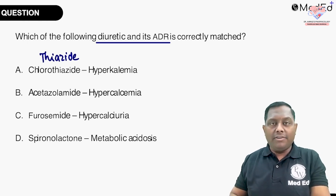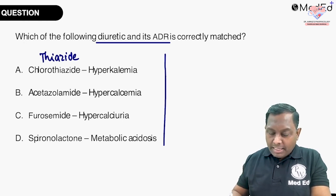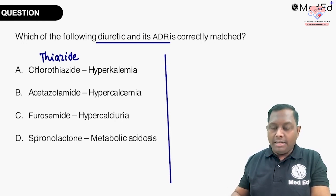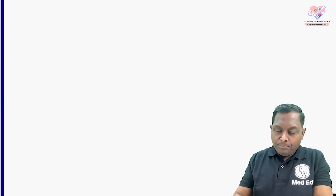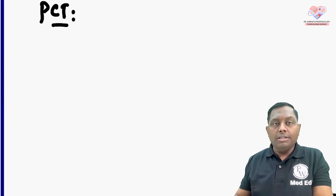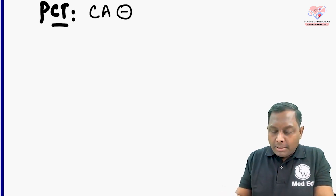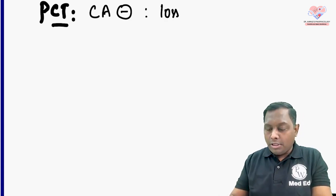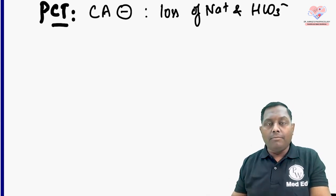Let us discuss the important side effects of diuretics. On the proximal convoluted tubule, the diuretic that works is the carbonic anhydrase inhibitor. This carbonic anhydrase inhibitor causes loss of water, loss of sodium, and loss of bicarbonate.